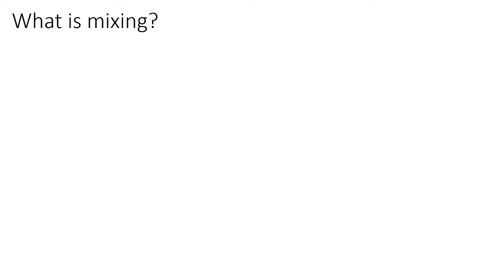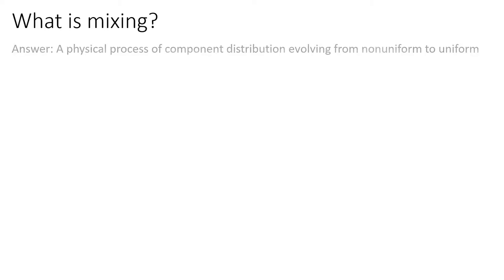Let's begin. First, let's ask ourselves a question: what is mixing? Mixing is a ubiquitous phenomenon in our everyday life. Generally, when we say mixing, we mean a physical process of component distribution that evolves from non-uniform to uniform. For example, when a cube of salt mixes with pure water, the salt distribution evolves from a cube to homogeneously distributed in water, and we get salt water.